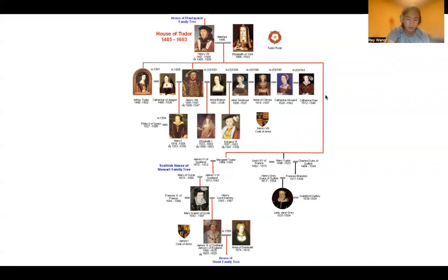Hello everyone, and today we will talk about the House of Tudor, which reigned England from the years 1485 to 1603. The House of Tudor is descended from the Welsh House of Tudor, as well as from France, being from Catherine of France. This era is marked by changes in women's rights, changes in religion, rebellions, succession fights, and overall disorder.